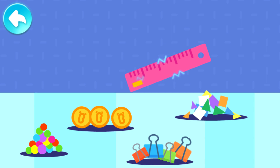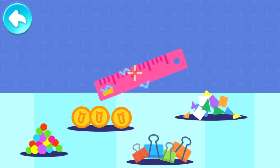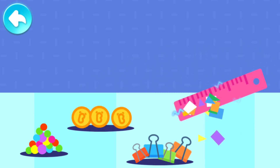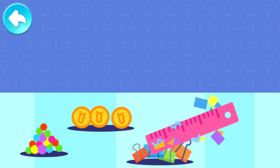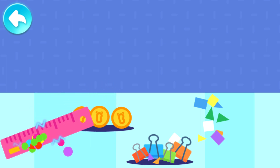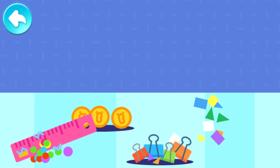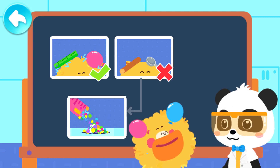Rub the ruler against the towel to create static electricity. Move the plastic ruler close to them and see what it can attract. Static electricity can't attract the coins. The small pieces of paper were attracted by the static electricity. Static electricity can't attract the metal clips. The small foam balls were attracted by the static electricity. The pieces of paper and small foam balls were both attracted by static electricity.